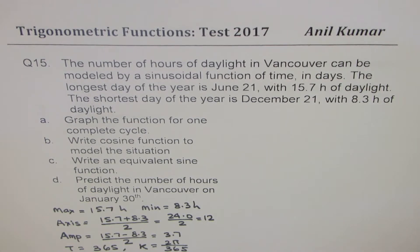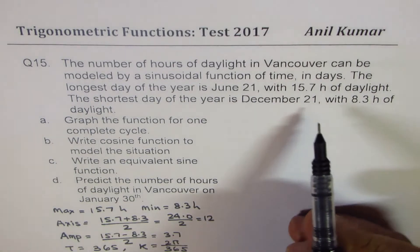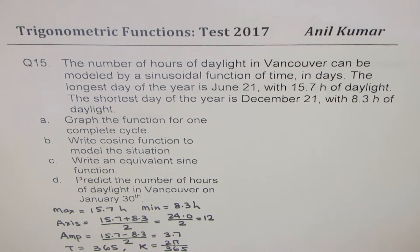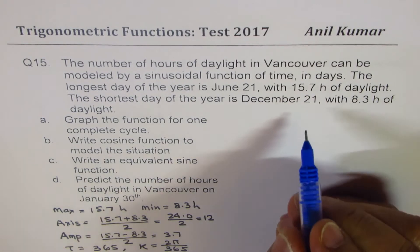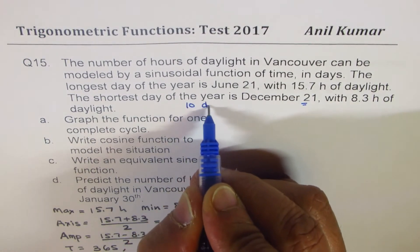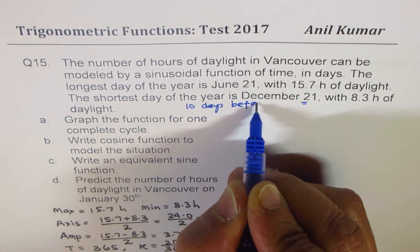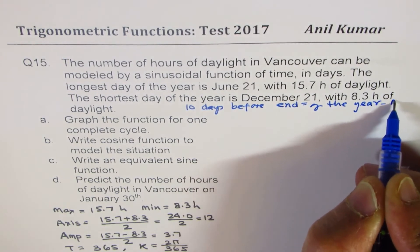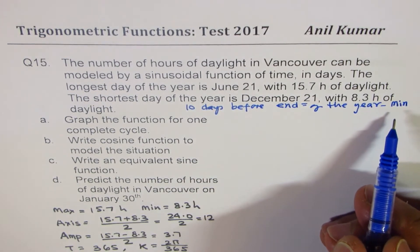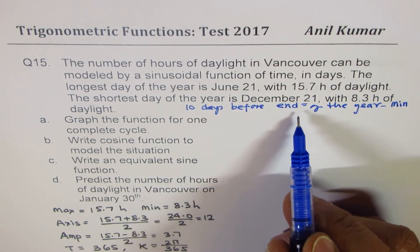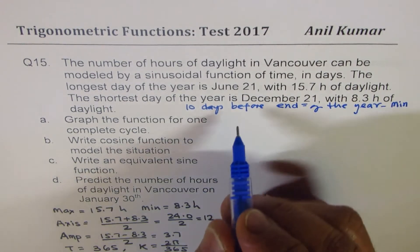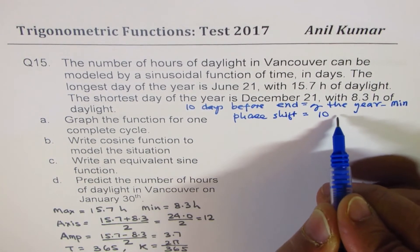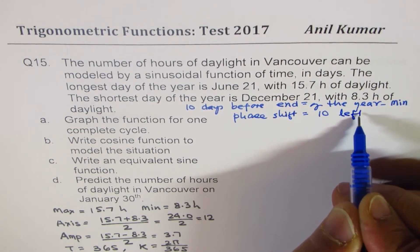The important thing to find here is the phase shift. We notice that on December 21st we have a minimum — that is 10 days before the year end, so 10 days before the end of the year we have a minimum. That means we could think about a cosine function starting 10 days before with a minimum, which gives us the graph and the phase shift. The phase shift is 10 units to the left.